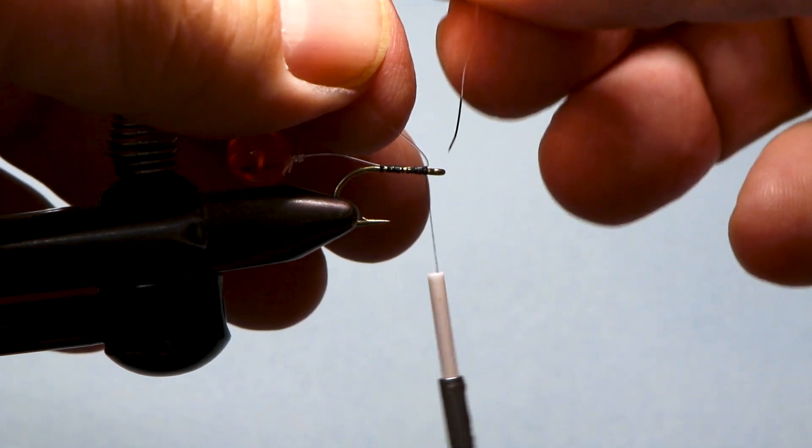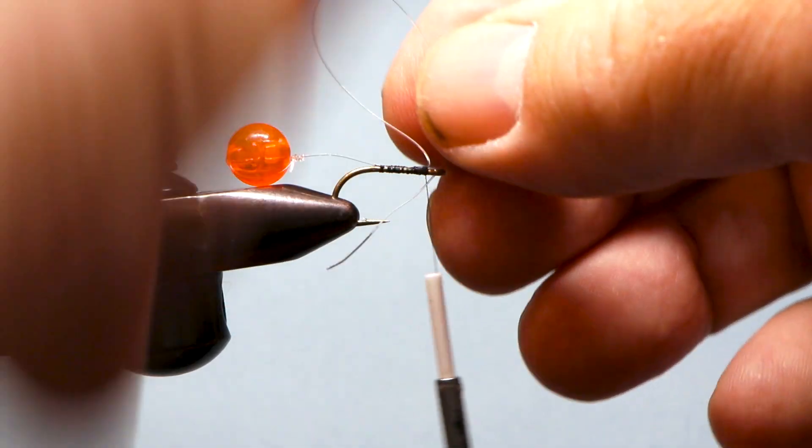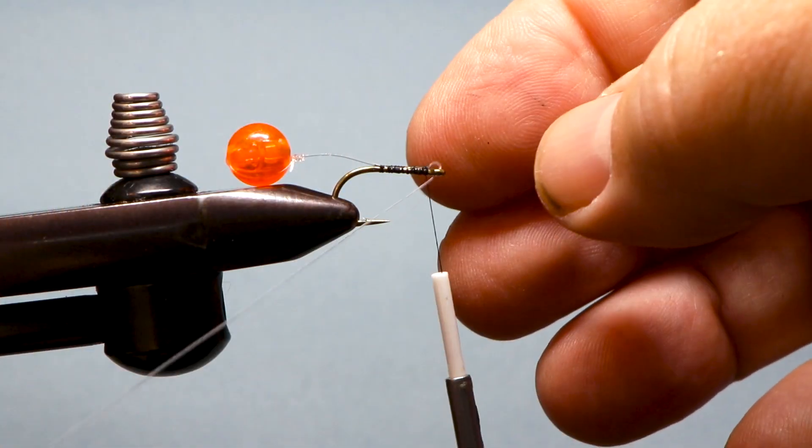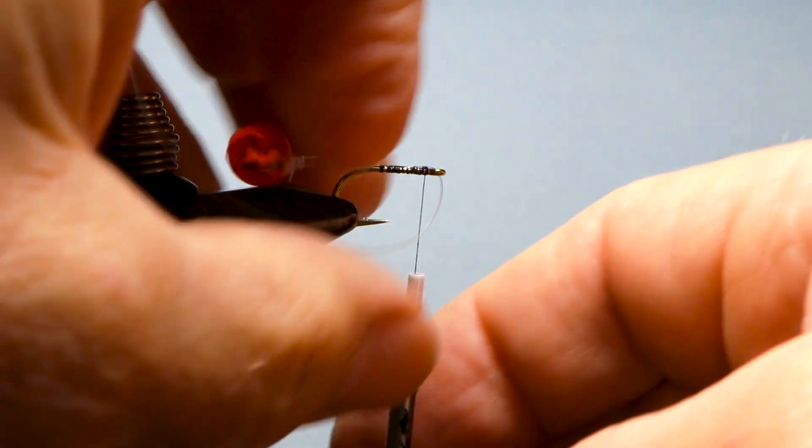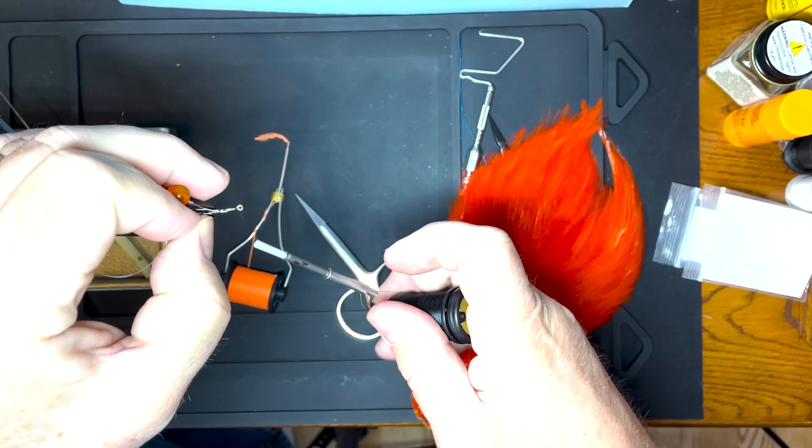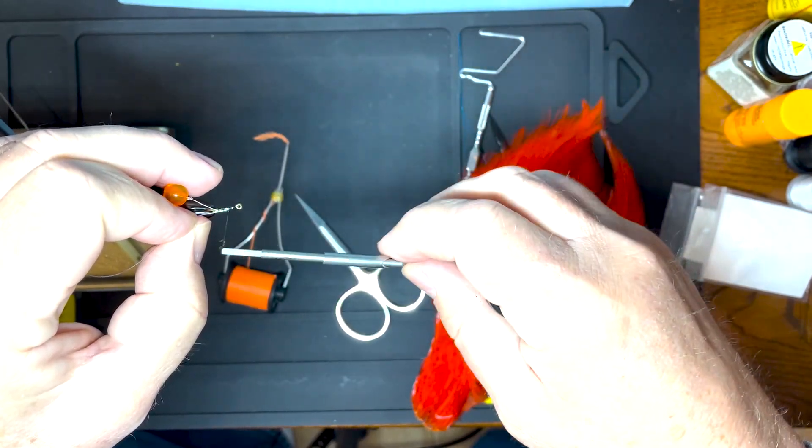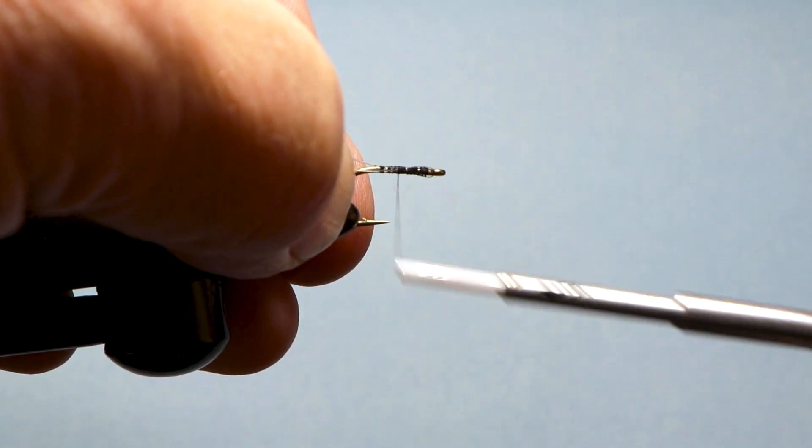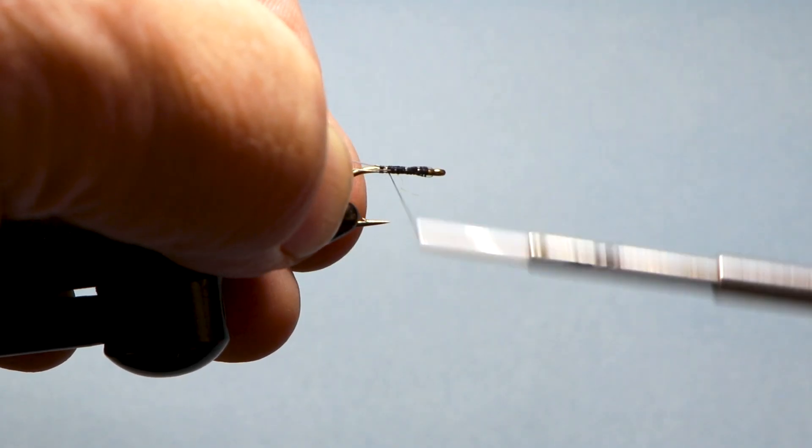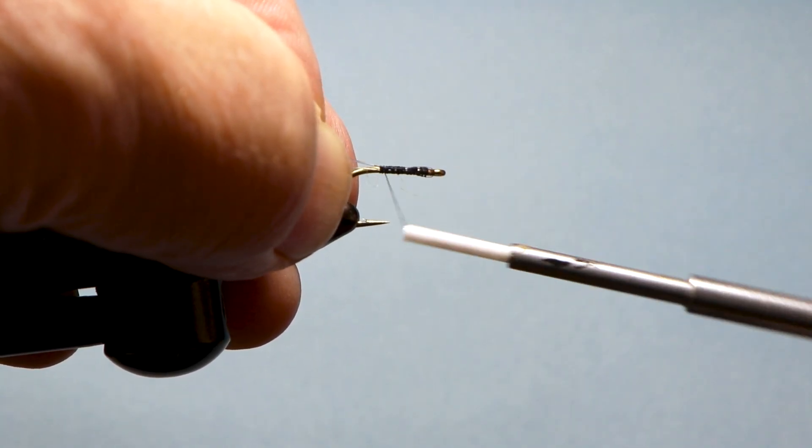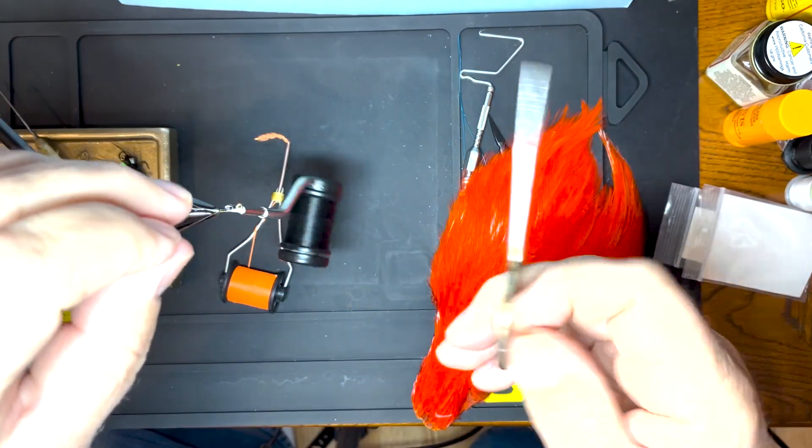So I do this. This might be a little bit different than the way he does it but I like to double back on that mono because I think it makes it a little stronger and you're not going to lose the bead so easily. I'm just going to trim that.